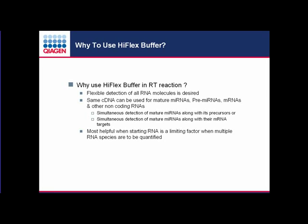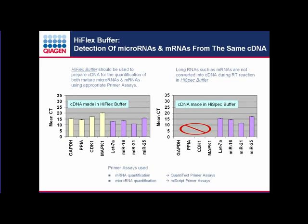Here is an example: cDNA prepared using high-flex buffer was used to quantify a panel of mRNAs and a panel of microRNAs from the same cDNA — using QuantiTect primer assays for mRNA detection and miScript primer assays with universal reverse primer for microRNA detection. When using high-spec buffer to prepare cDNA, you can only detect microRNAs, not mRNAs, because longer RNAs are not converted into cDNA in the presence of high-spec buffer.